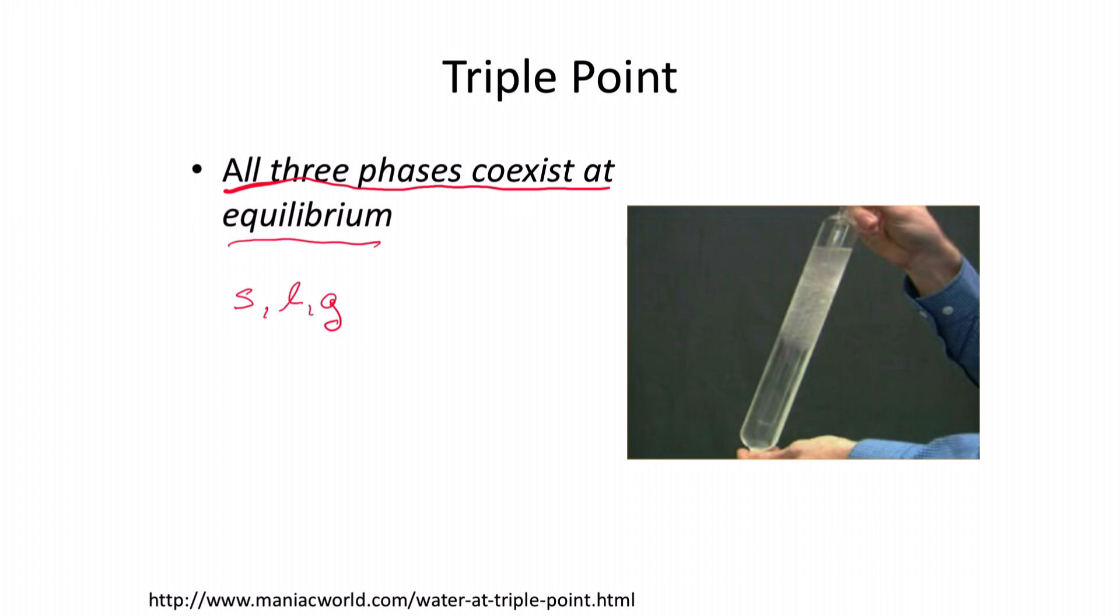The triple point for something is fixed. I can't change it, can't alter it. It is what it is. But it is a property of that substance. So every substance has at least one triple point where it can have a solid, a liquid, and a gas all there at the exact same time.